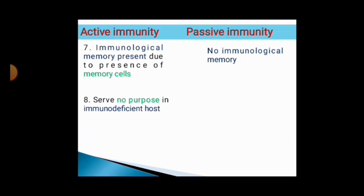Active immunity serves no purpose in an immunodeficient host, because it involves the immune system — and in an immunodeficient host, either immune cells are absent or they are inactive. Whereas passive immunity is applicable in an immunodeficient host, because it is induced by the introduction of ready-made antibodies and there is no need for the immune system.